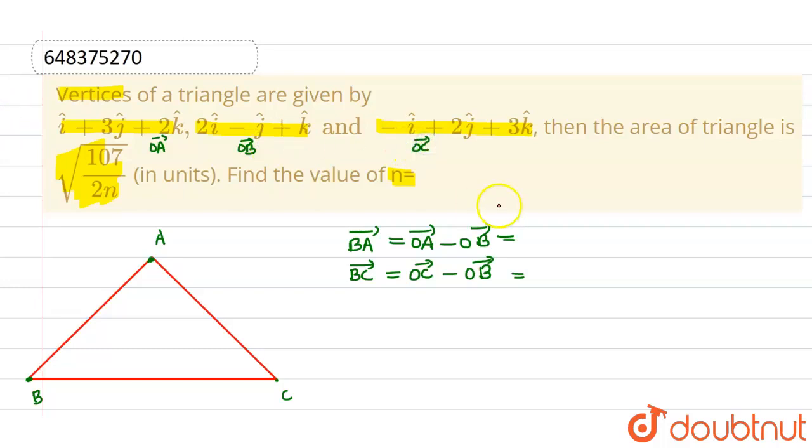So the OA vector is nothing but i cap plus 3j cap plus 2k cap minus OB vector. OB vector is 2i cap minus j cap plus k cap. And similarly the OC vector is given as minus i cap plus 2j cap plus 3k cap minus OB vector, which is given as 2i cap minus j cap plus k cap.